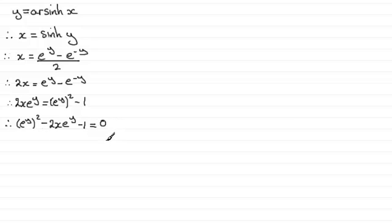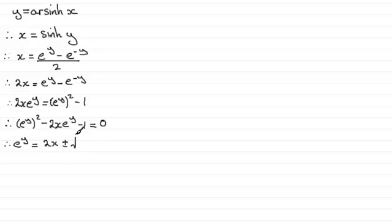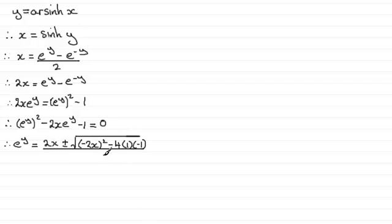With this quadratic equation, if we use the quadratic formula, then e to the power y equals: a is 1, b is minus 2x, and c is minus 1. Using the quadratic formula, we get minus b, which is 2x, plus or minus the square root of b squared — which is minus 2x all squared — minus 4 times a, which is 1, times c, which is minus 1, all divided by 2a, which is 2 times 1.